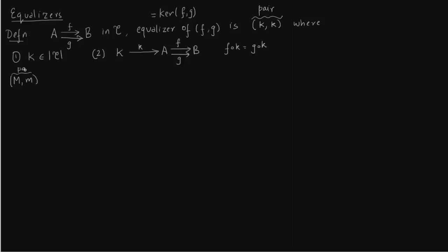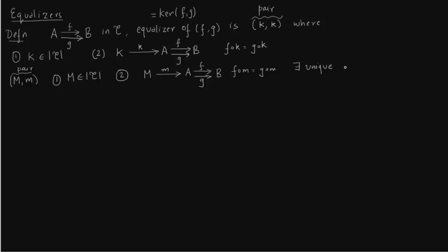Now if there is another pair (M, m) — where M is an object of the category and m is the arrow — which satisfies the same two conditions and a similar diagram, then there exists a unique morphism N connecting these two, such that m = k∘N.